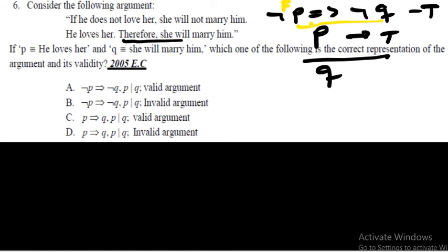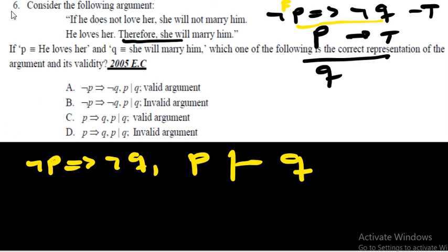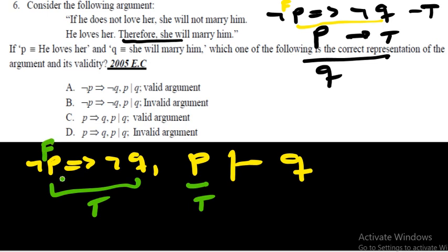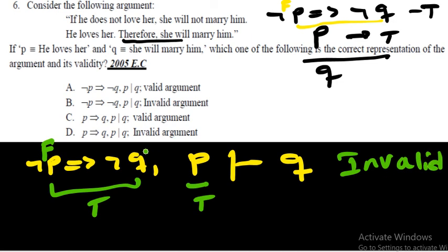Since p is true, ¬p is false. The premise ¬p→¬q is true, but with ¬p false, the conditional is true regardless of ¬q — it could be false or true. We cannot deduce the truth value of q. Therefore we cannot say the argument is valid; it is invalid. The answer is (b): premises are ¬p→¬q and p, conclusion is q — invalid.